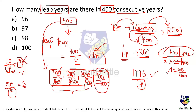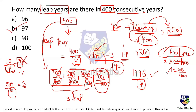That means three of those centuries — 100, 200, and 300 — are not leap years, but were incorrectly counted when we divided by four. So we need to subtract those three years from 100, giving us 97 leap years. In total, 97 leap years will be there in 400 continuous years.